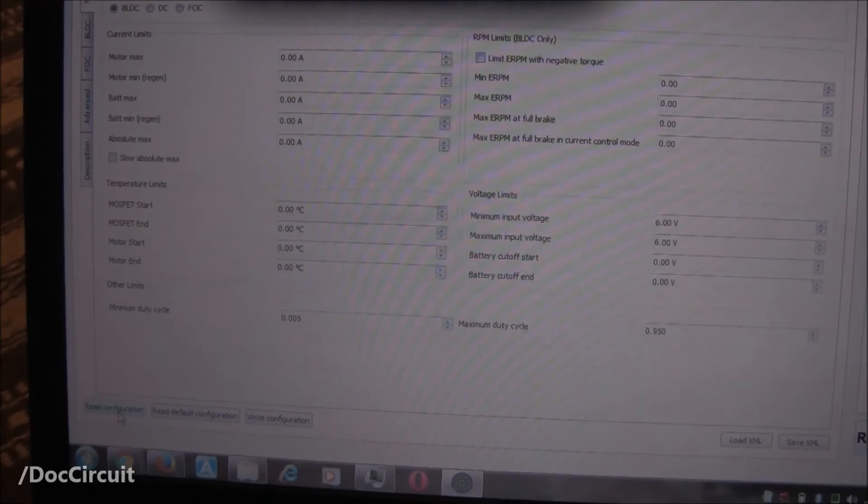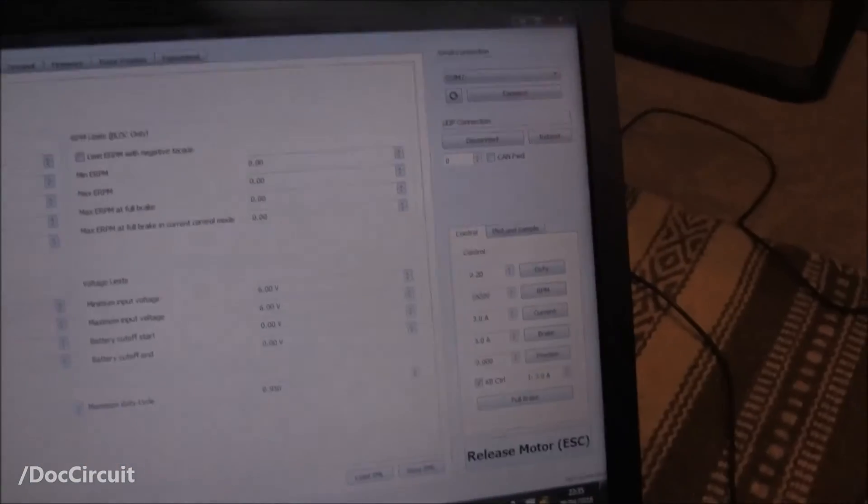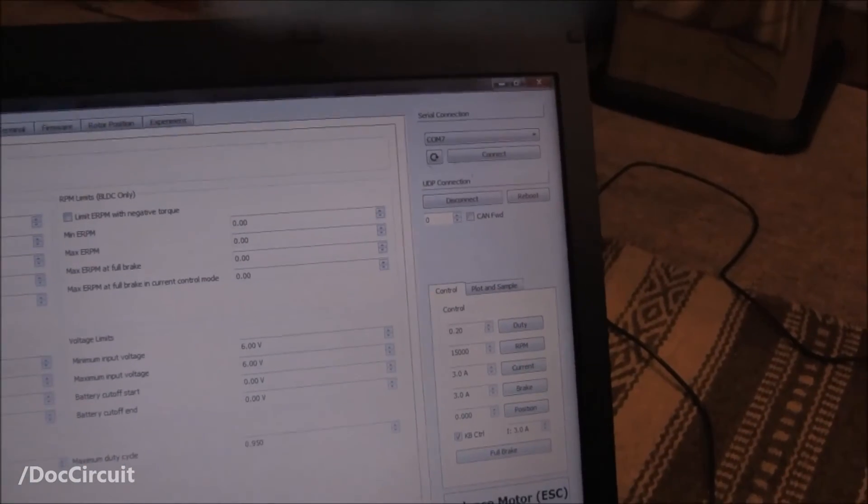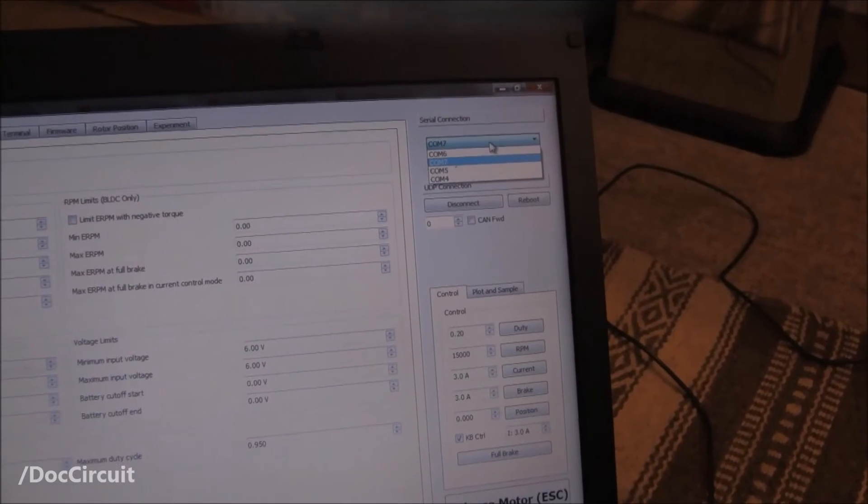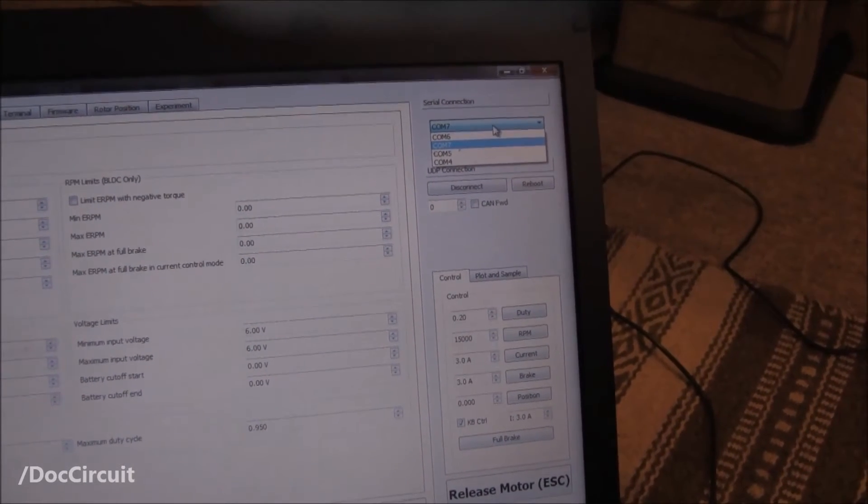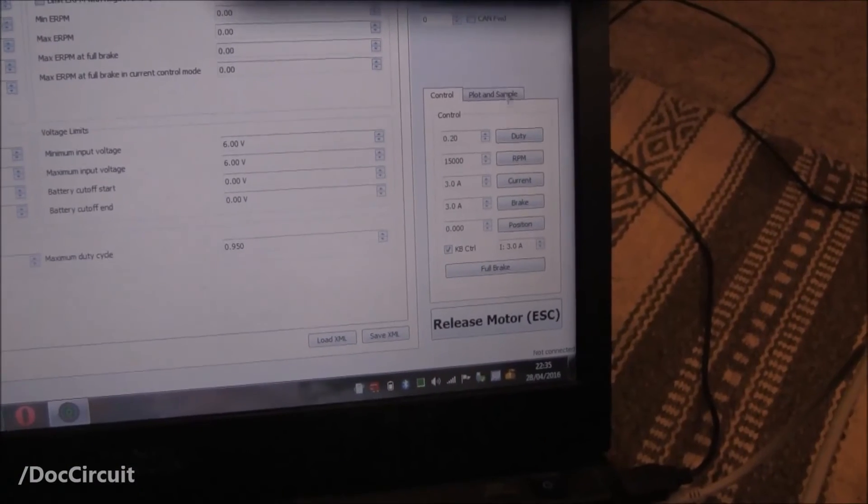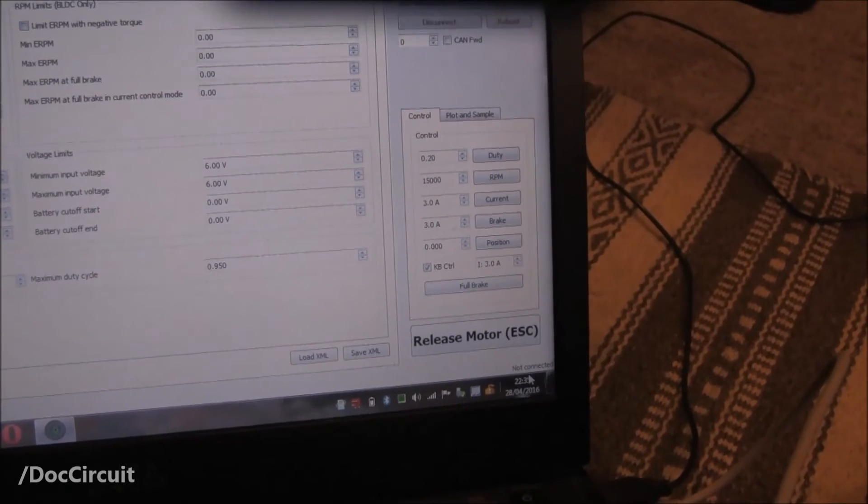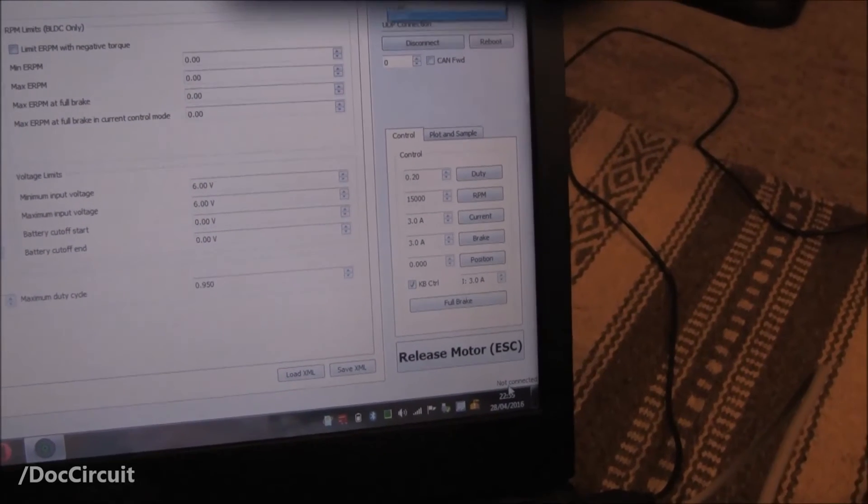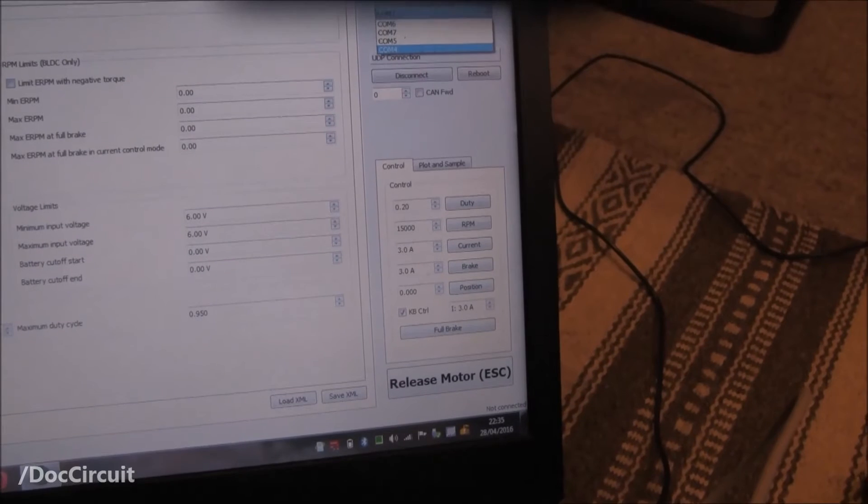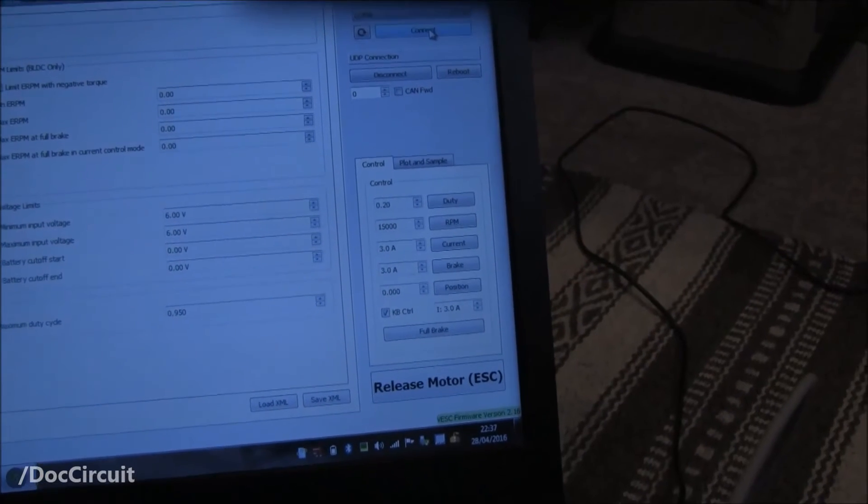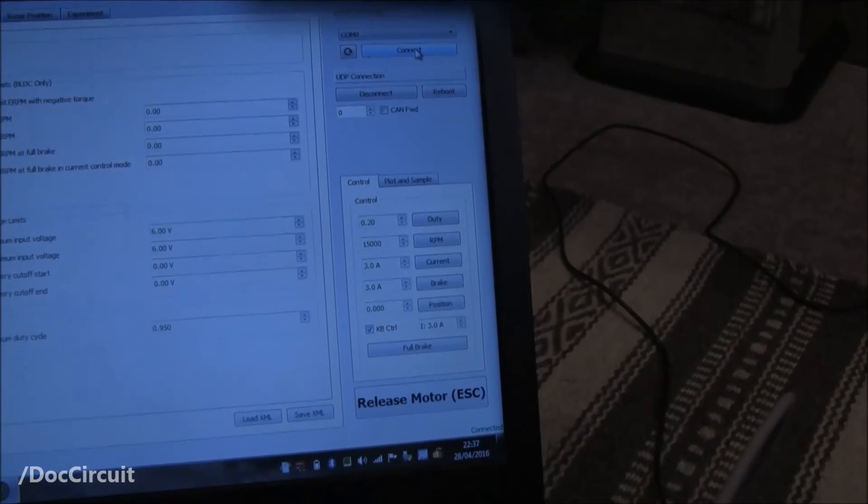After you've connected the power board to the laptop, you need to connect it in the software. Top right is a bunch of COM ports. You need to find the one that works for you. Bottom right, down here, it says not connected. That should change when you get the right COM port. Eventually it will flash green and say connected. And you're up and running.